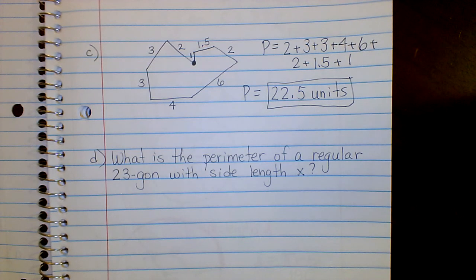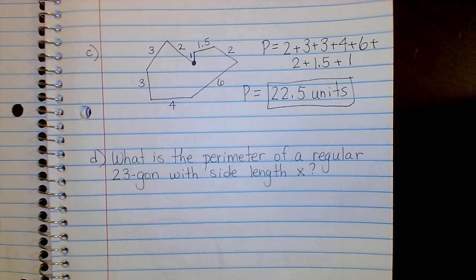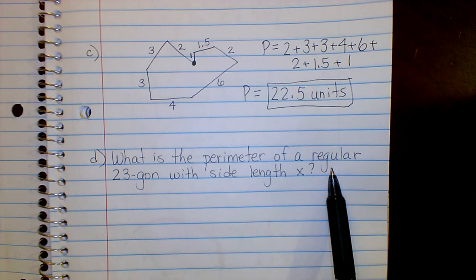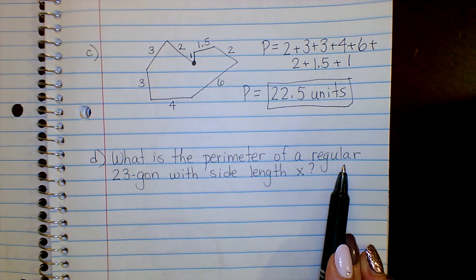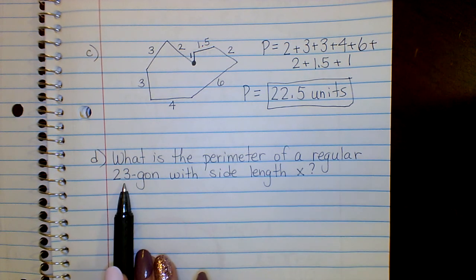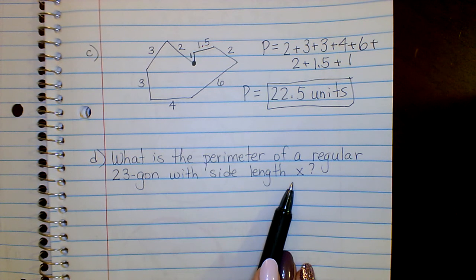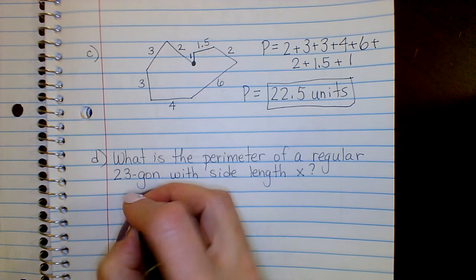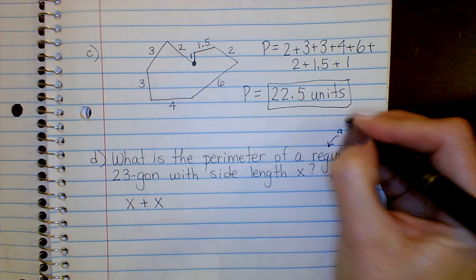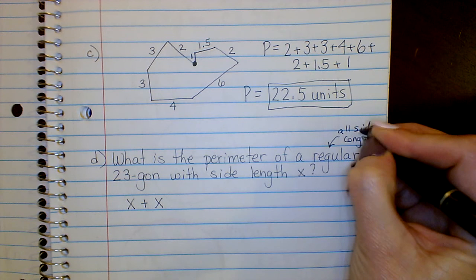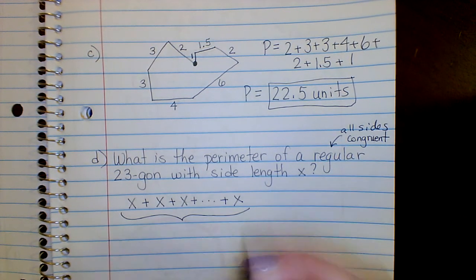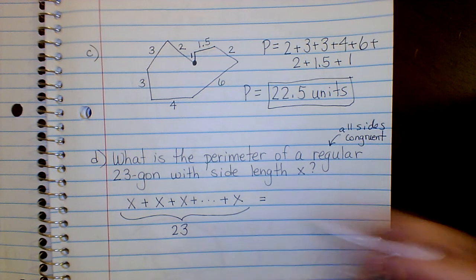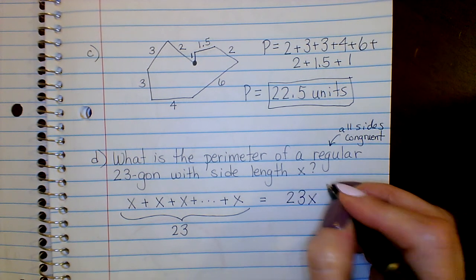For a complex polygon, add all the sides: mark your starting point so you don't count anything twice. Adding 2, 3, 3, 4, 6, 2, 1.5, and 1 gives 22.5 units. It's a good habit to mark where you start. For a regular 23-gon with side length x: 'regular' means all sides and all interior angles are congruent, and there are 23 sides — so the perimeter is simply 23 times x, or 23x.